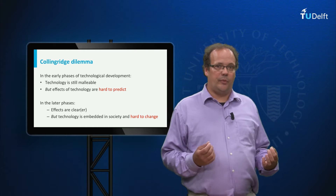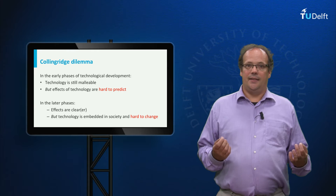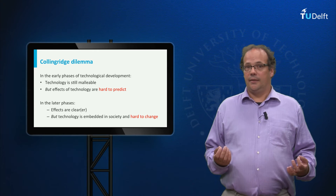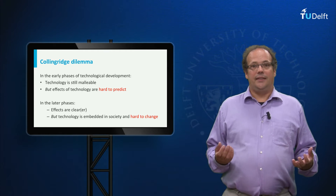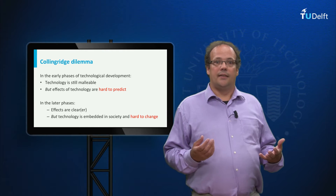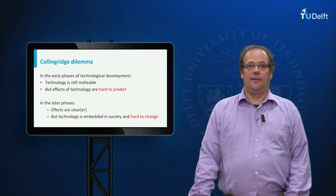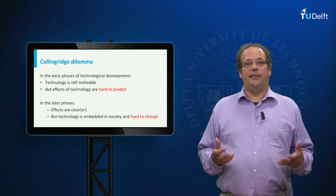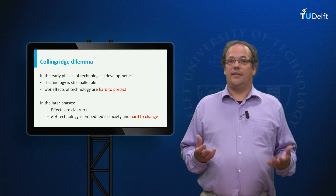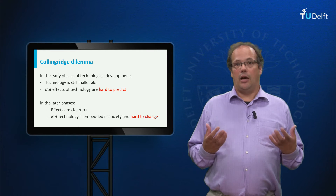Let us start with Collingridge's dilemma. This states that in the early phases of technological development, technology can still be changed, but in these phases the effects of the technology are hard to predict. In the latter phases we see the opposite: the effects are clear, but the technology is so well embedded in society that it is hard to change.